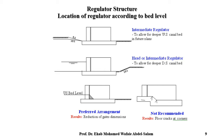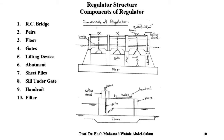The components of a regulator include: concrete, bridge, piers, floors, gates, lifting device, abutment, sheet piles, sill, under-gate, handrail, and filter. These are visible in the engineering drawing provided.